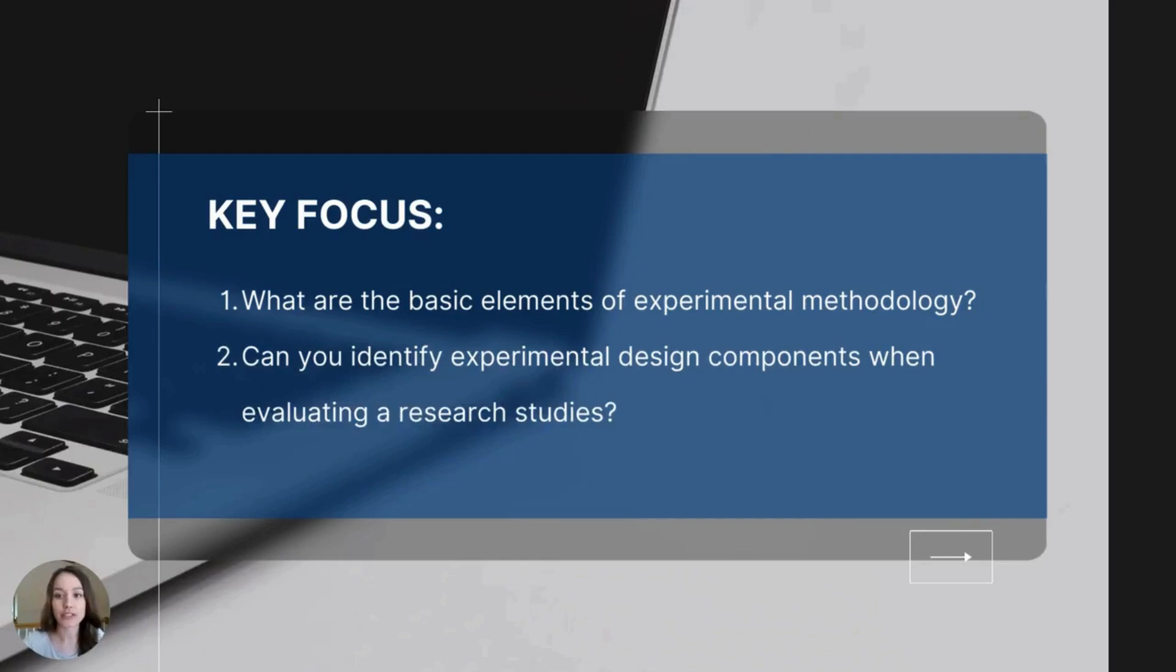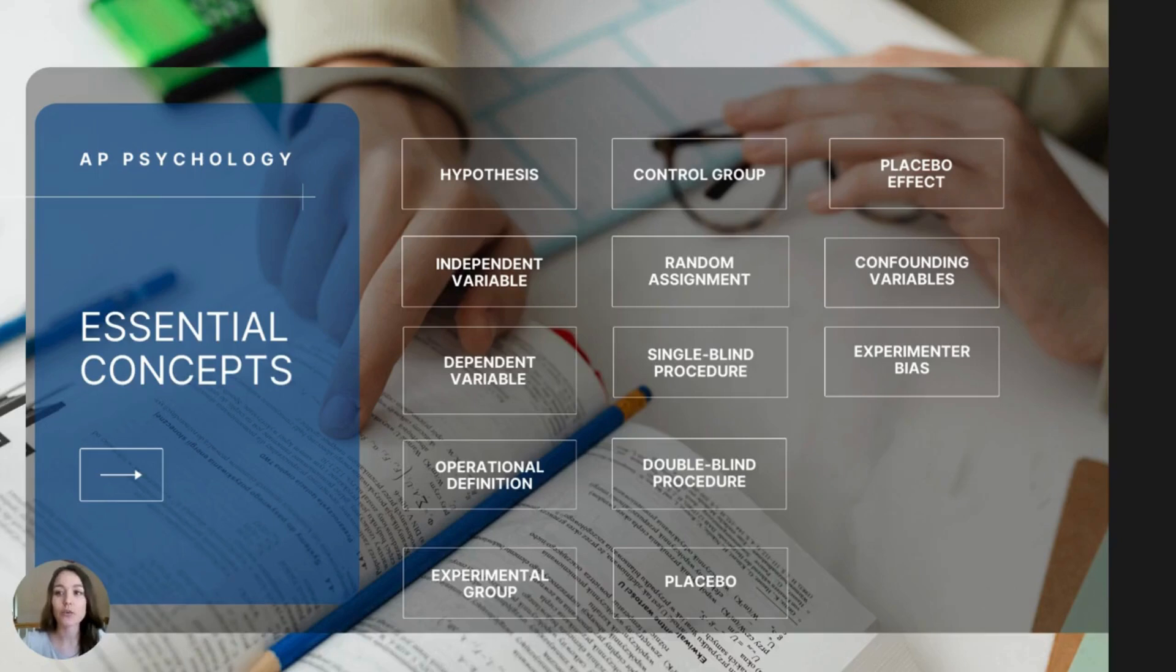To begin, here's a look at the key focuses of this video. By the end you should be able to answer these two questions: What are the basic elements of experimental methodology and can you identify experimental design components when evaluating research studies? You will also be able to define the essential concepts listed here. You might notice some reoccurring terms on this list. Hopefully you remember a few of them.